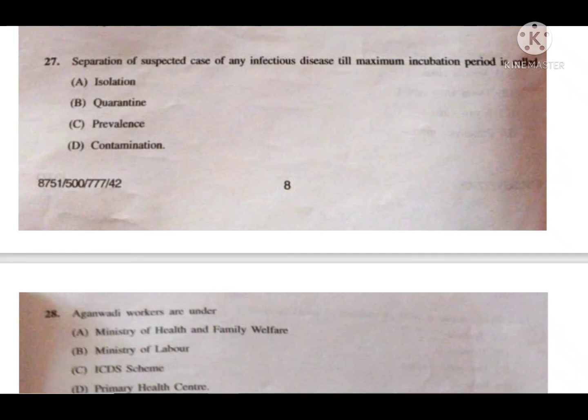The next question involves options: A is isolation, B is quarantine, C is prevalence, and D is contamination. The correct answer is option B — quarantine. In COVID-19 during the first wave, a 14-day quarantine was enforced because the incubation period of COVID-19 is 14 days, so exposed persons were quarantined to prevent spread.